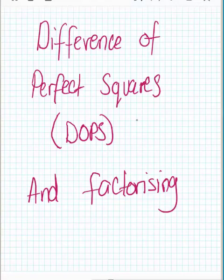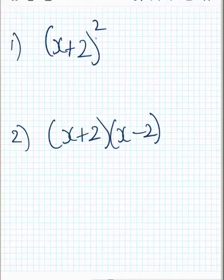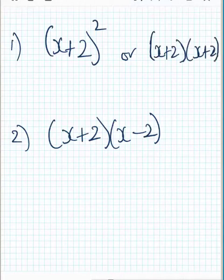This session is on the difference of perfect squares, what we call DOPS, and how to factorise these. If you have a look at these two examples, the first one is what we call a perfect square, because if I was to extend this and write it this way, that square means x plus 2 times x plus 2 — we have the exact same thing, which leads us to what we call a perfect square.